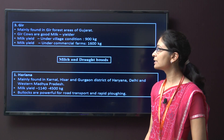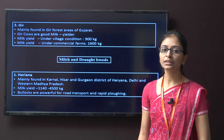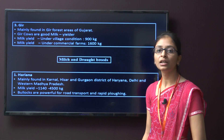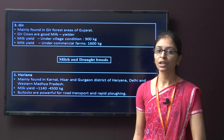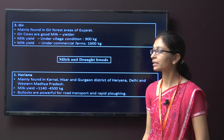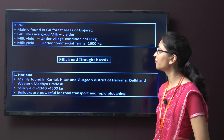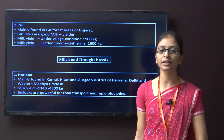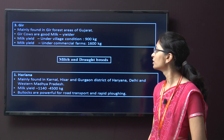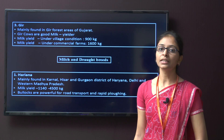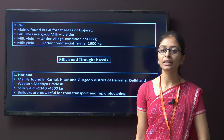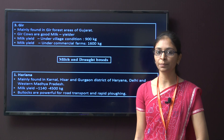The third breed is Gir. This breed is mainly found in the Gir area of Gujarat. The Gir cows are good milk yielders; the milk yield under village condition is around 900 kg, but under commercial farm conditions it is around 1600 kg. The second type of cattle breed is the milk and draft (dual purpose) breed.